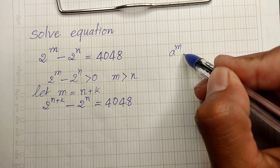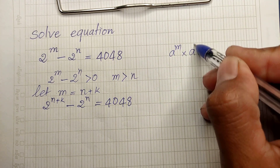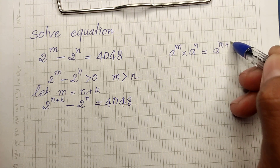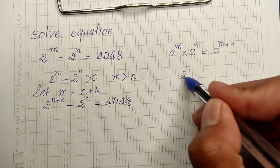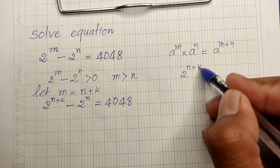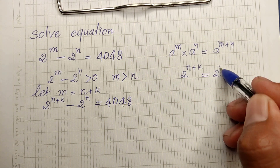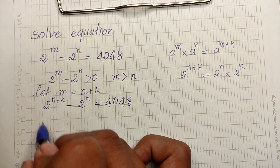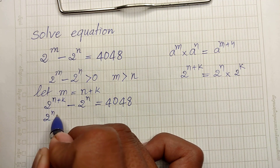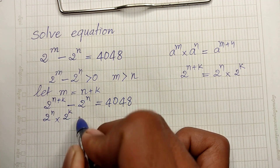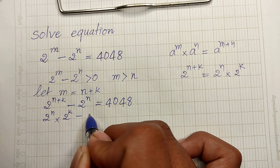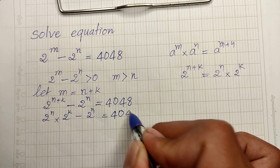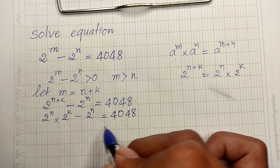Now we apply the exponent rule: a to the power m+n equals a to the power m multiplied by a to the power n. So 2 to the power n plus k can be written as 2 to the power n multiplied by 2 to the power k. We rewrite the equation as 2 power n times 2 power k, minus 2 power n, equals 4048.